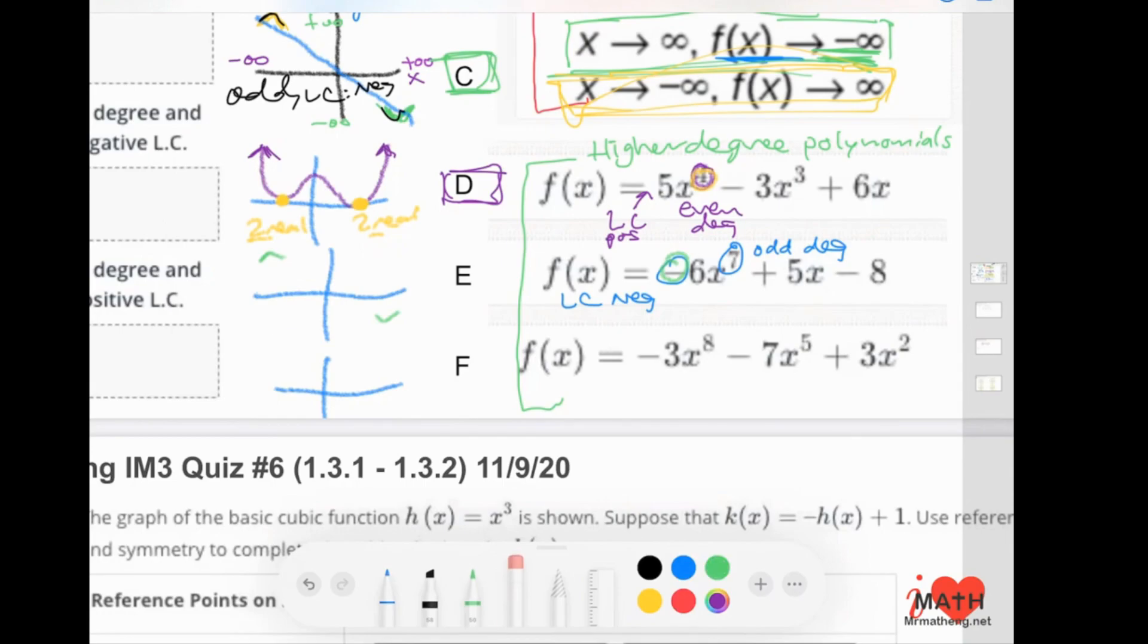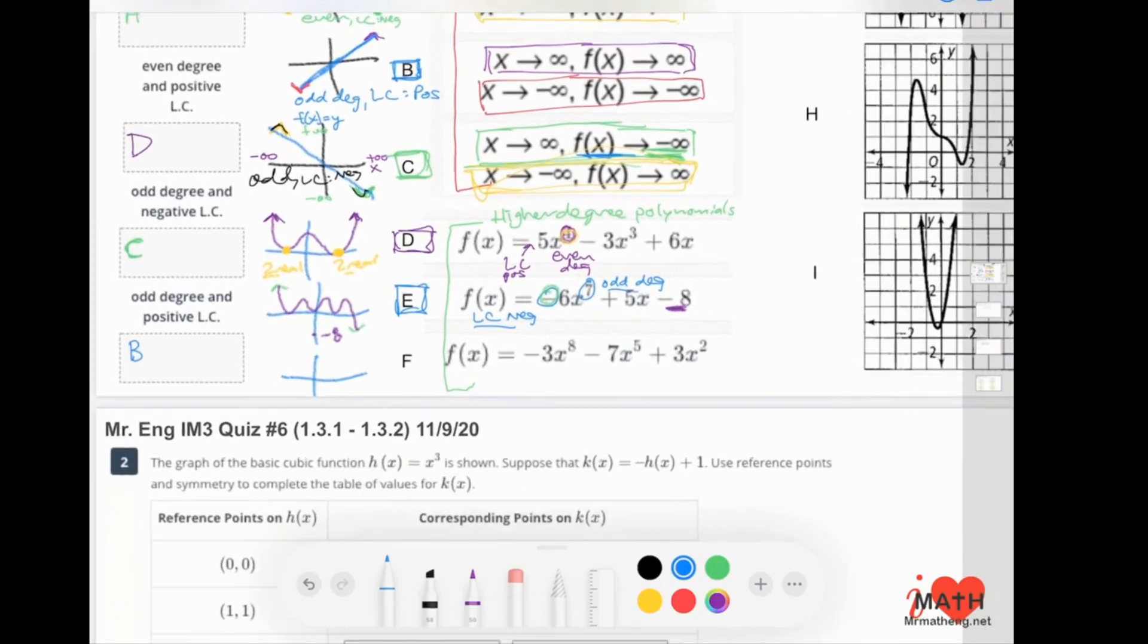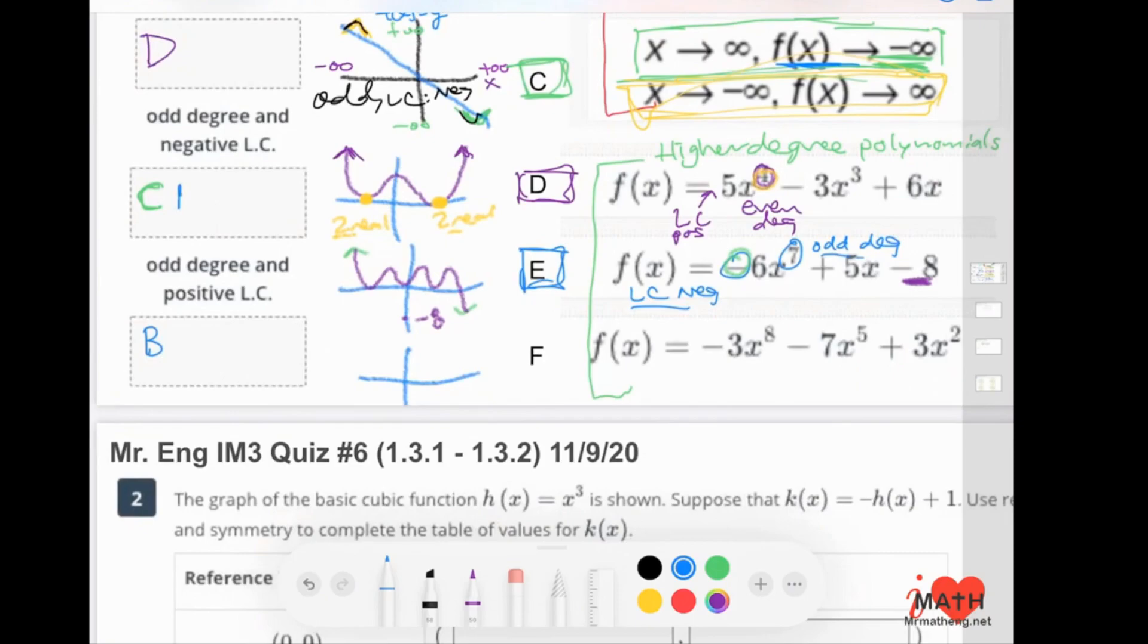So your graph is going to look something like this: seven of these. One, two, three, four, five, six, seven. That would actually be pretty accurate. We missed that, would have gone through negative eight. Big idea though is that this one is a negative and odd. So that would be here.